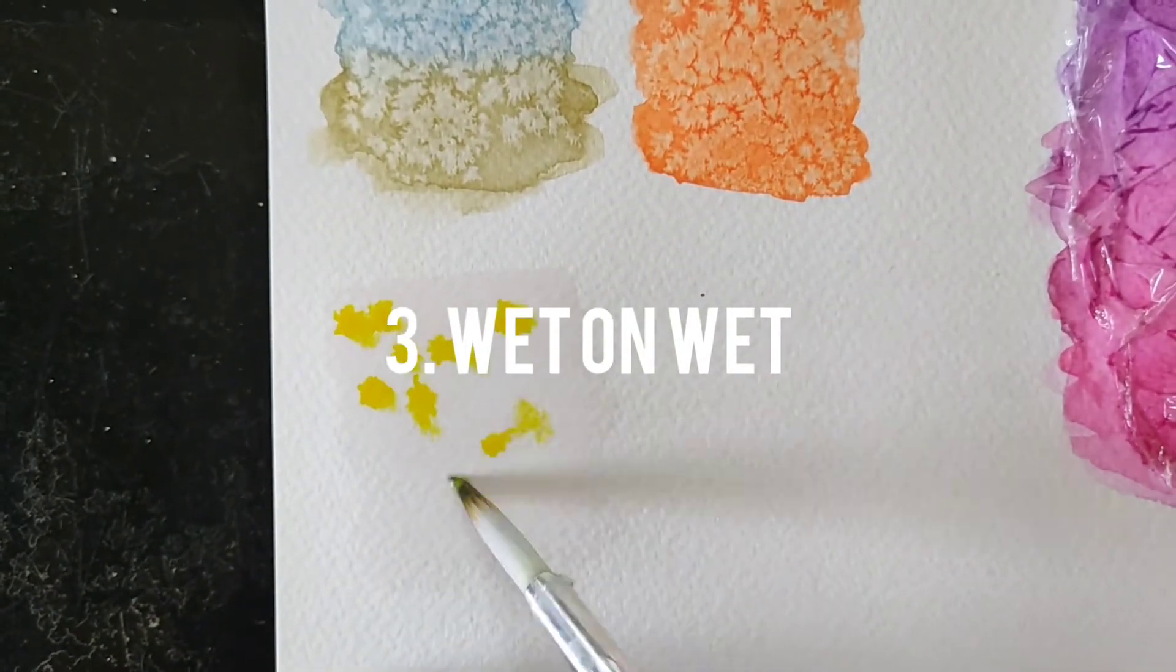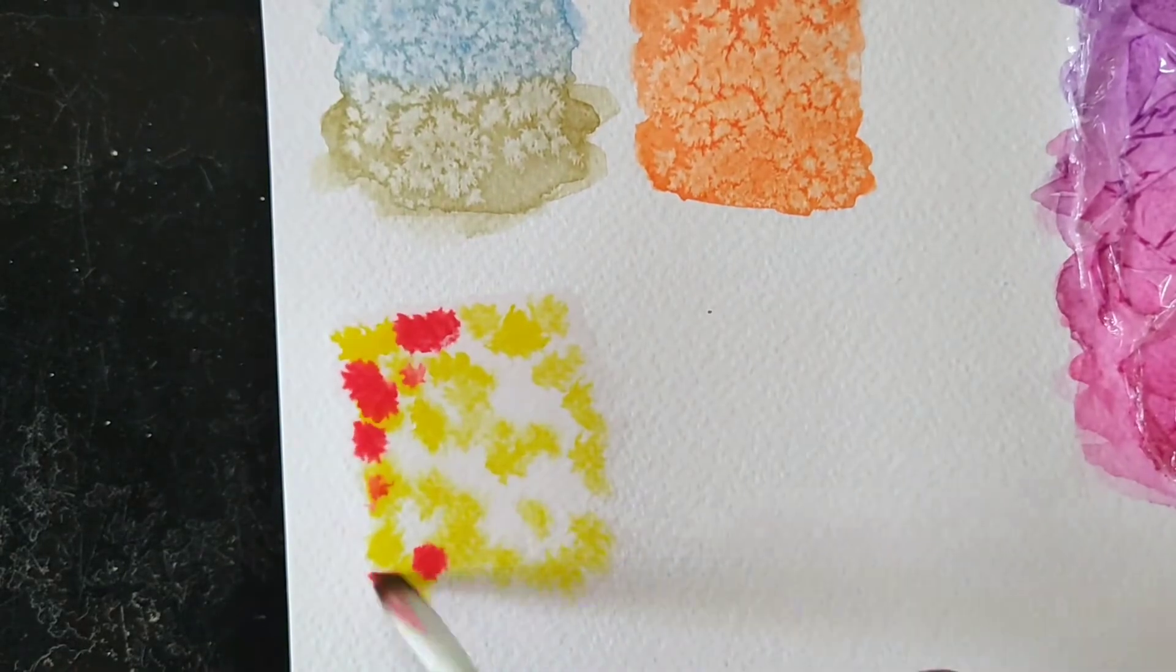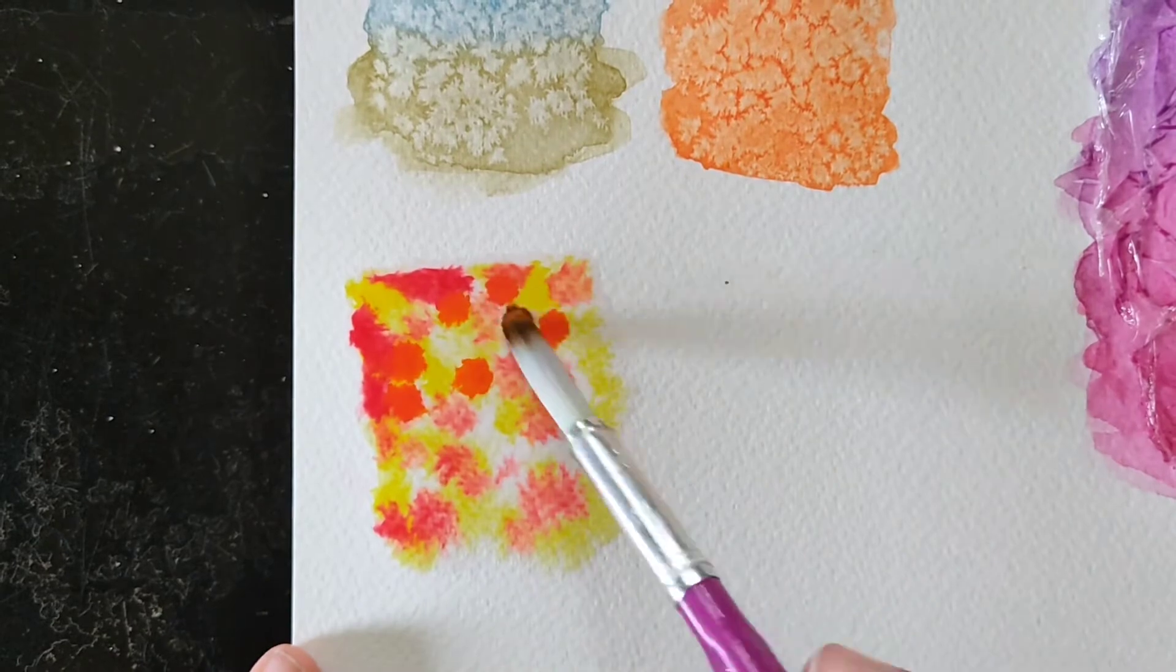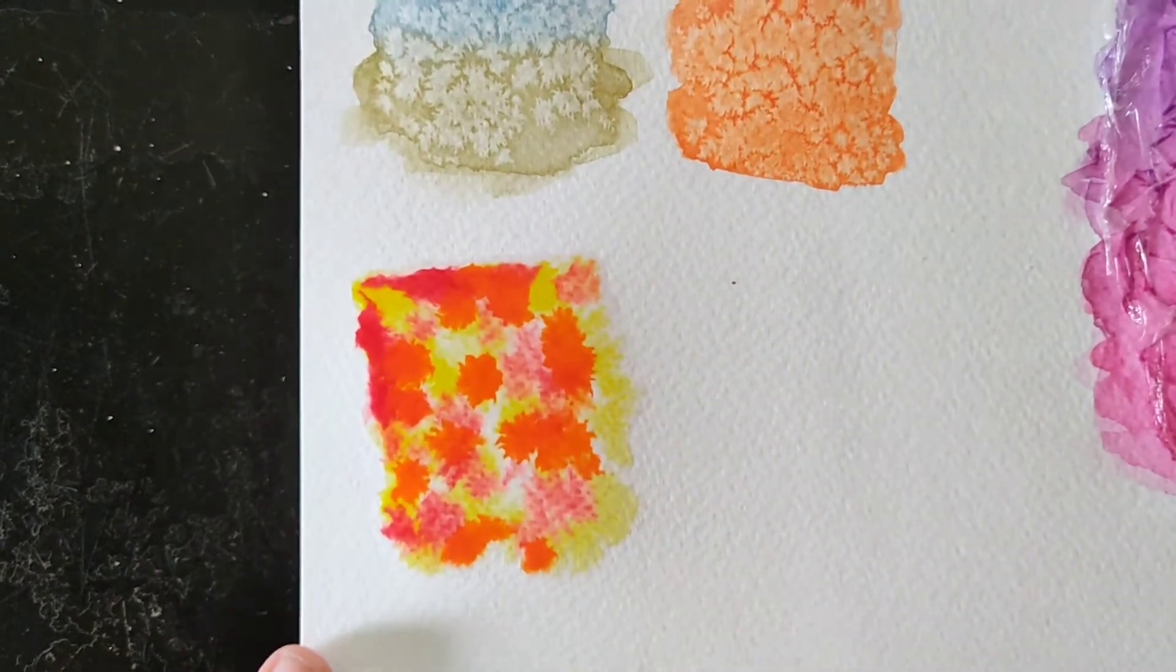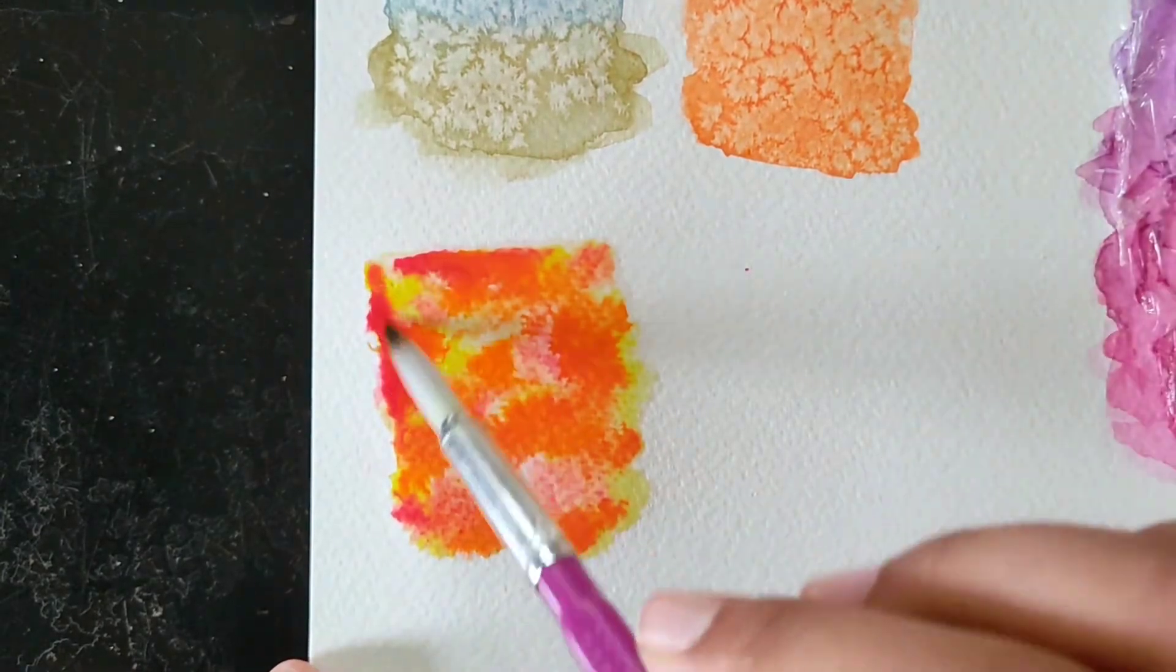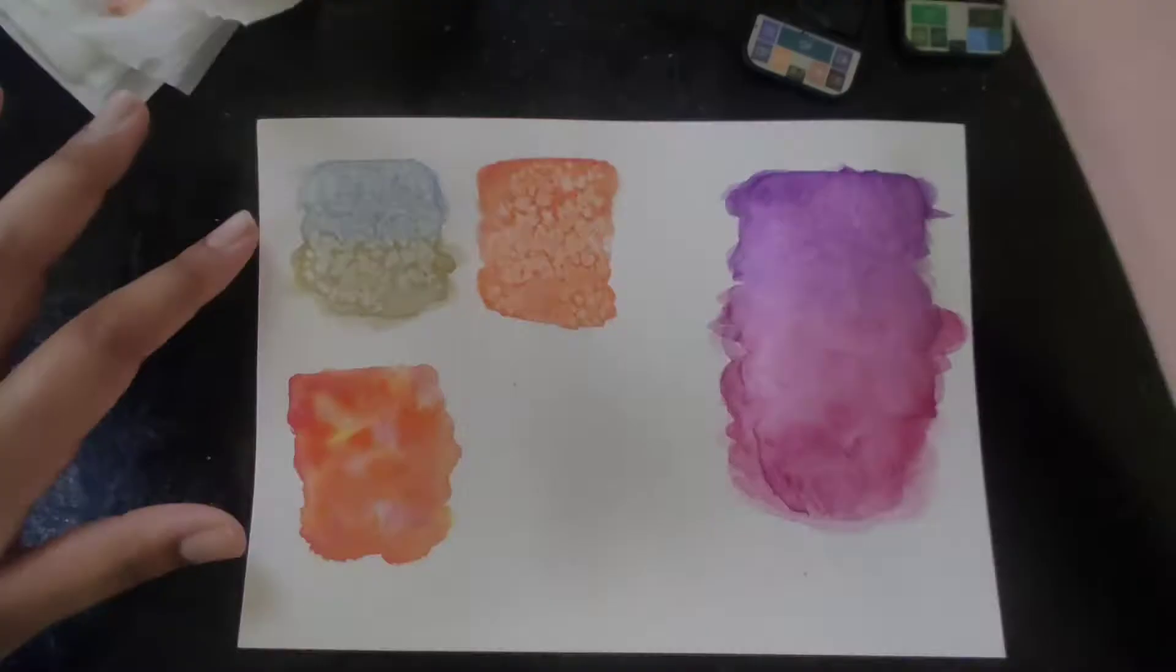Next effect is wet on wet. Wet on wet is a technique that is very useful for creating blur backgrounds in any kind of loose watercolor paintings. This main effect's reason is that once you dab in all the colors, it'll bleed in together, it'll do its own magic and create a beautiful background.